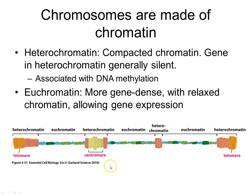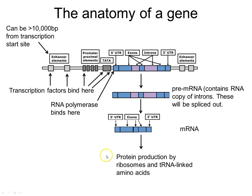The euchromatin is where you've got your gene-dense regions, and the relaxed parts of euchromatin allow gene expression. What we're going to study is how the chromatin gets into a relaxed configuration. Here's just a reminder of what a gene is like on the whole scale of things.